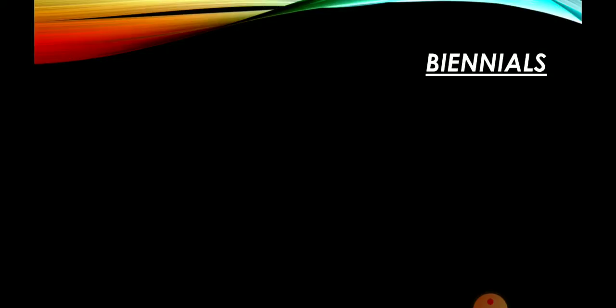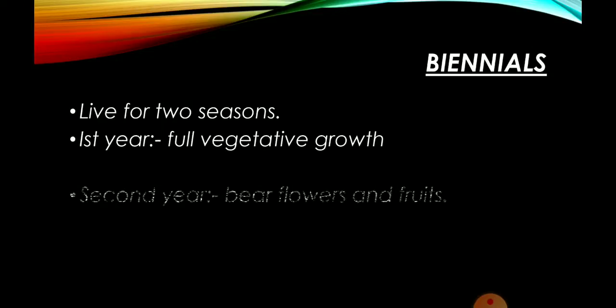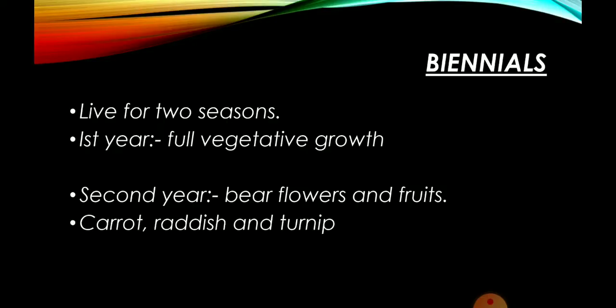Then biennials में हम आए — biennials जो हैं, two seasons के लिए रहते हैं। One season में ये अपनी full vegetative growth करते हैं, और second year में इसके ऊपर flowers और fruits आते हैं। For example: carrot, radish and turnip — ये biennials हैं।